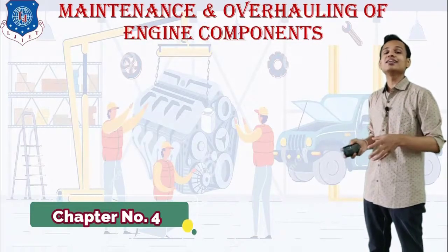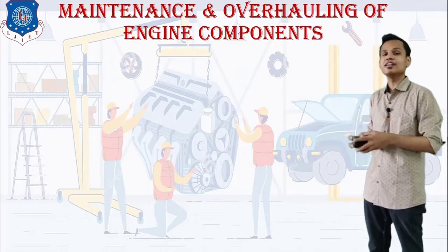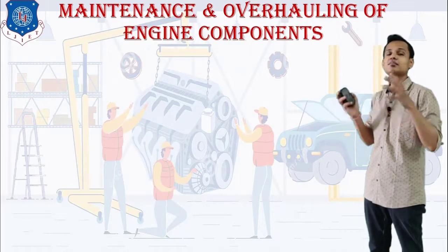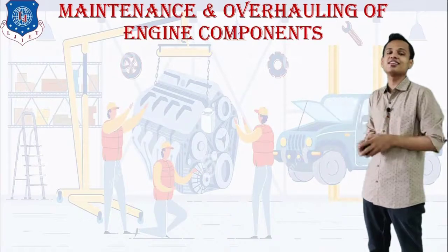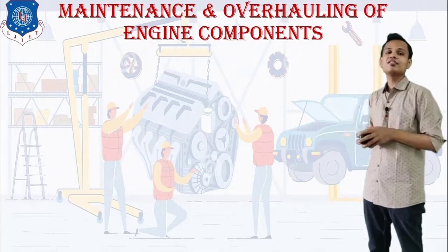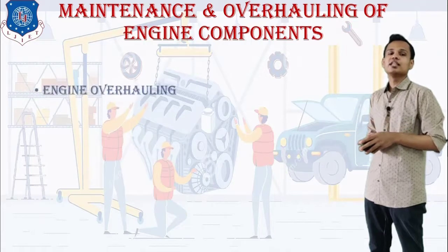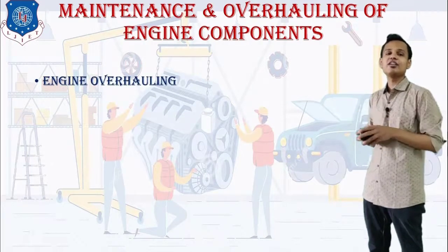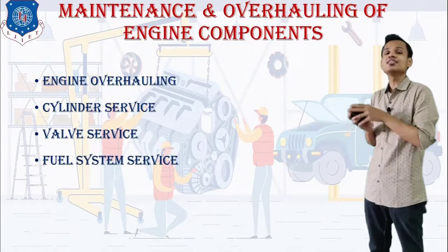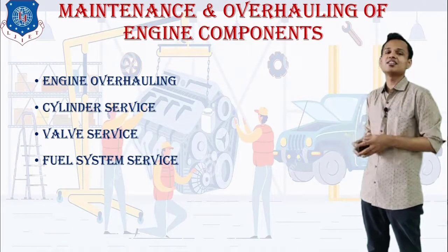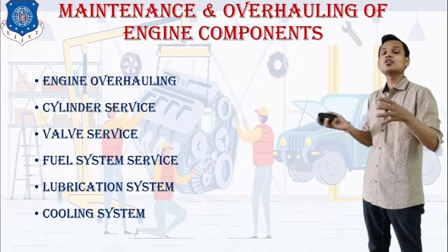The fourth chapter is on maintenance and overhauling, which has a weightage of 46 percent in the GTU syllabus — the biggest and most important chapter. It is divided into five parts. The first part is maintenance of engine components, covering engine overhauling, cylinder service, valve service, fuel system service — whether carburetor or fuel injection — as well as the lubrication system and cooling system, which are integral parts of the engine.